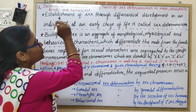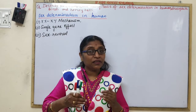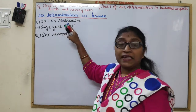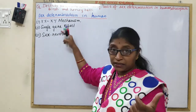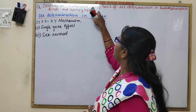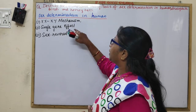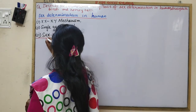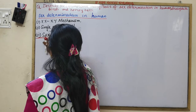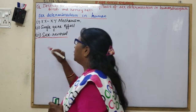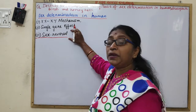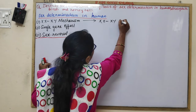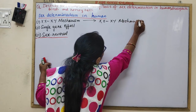Now, sex determination in man — the XX/XY mechanism. In humans, the genotype is 44+XX for females or 44+XY for males. Males are heterogametic because they have two heteromorphic sex chromosomes, X and Y, and produce two types of sperms: A+X (gynosperm) and A+Y (androsperm). Females are homogametic, having homomorphic sex chromosomes, and produce only one type of egg: A+X.